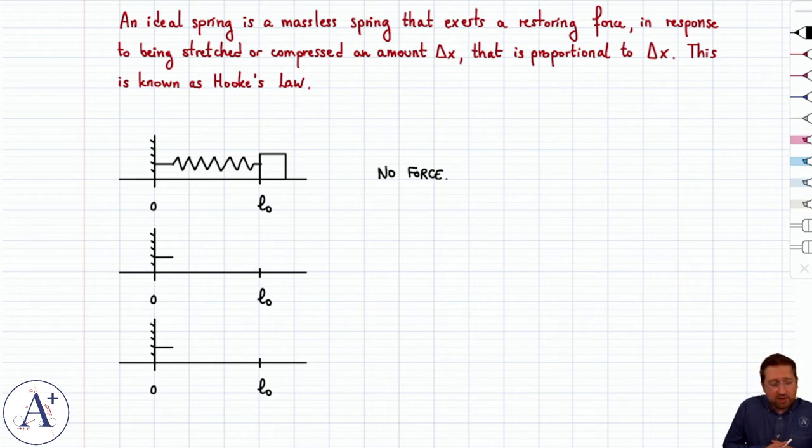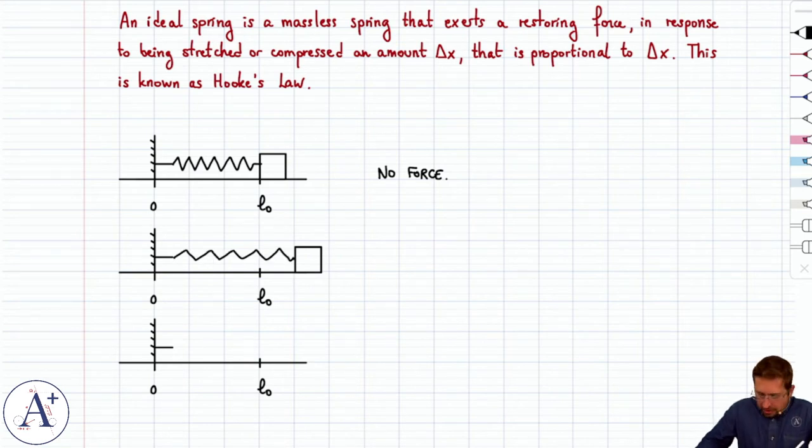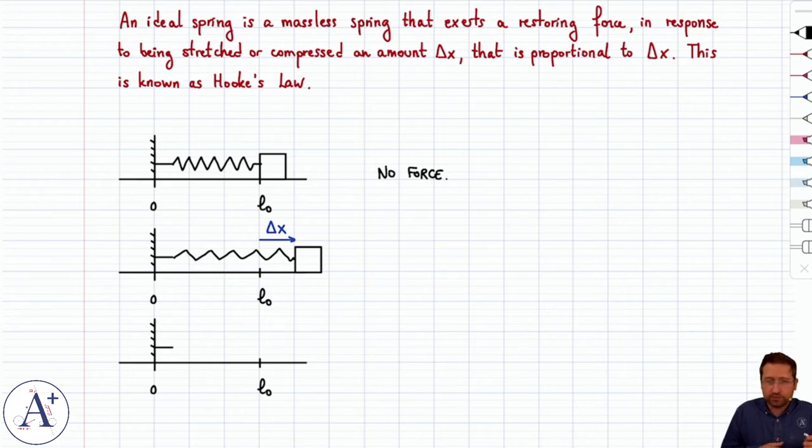Now if you take the block and you pull it away, because the spring is attached to it, you therefore stretch your spring. Then you've stretched your spring a certain amount - you've made it longer by a certain amount. Now that's going to be delta x - it's the change in the length of the spring. The spring is now longer by an amount delta x or x, it's equivalent - you'll find half the people use delta x, the other half use x.